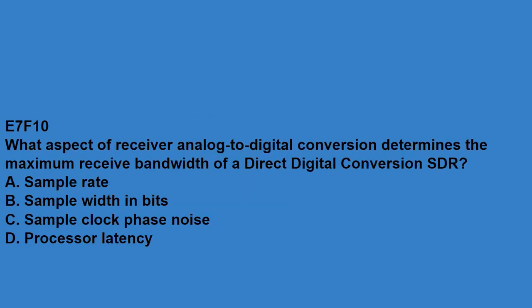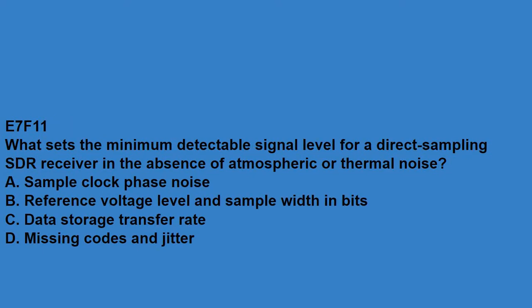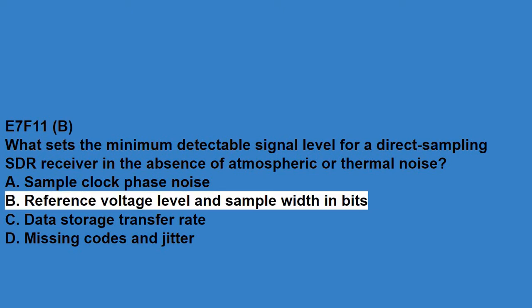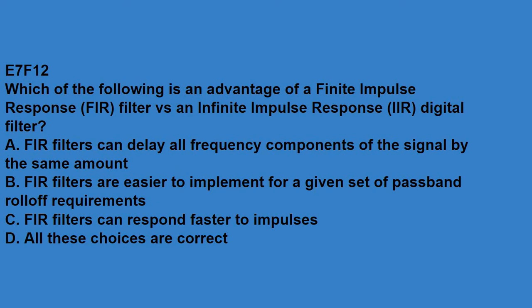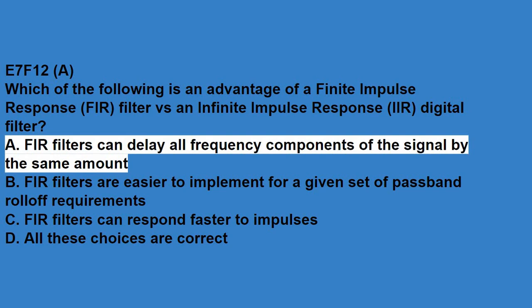E7F10, what aspect of receiver analog to digital conversion determines the maximum receiver bandwidth of direct digital conversion SDR? That is the sample rate. E7F11, what sets the minimum detectable signal level for a direct sampling SDR receiver in the absence of atmospheric or thermal noise? Reference voltage level and sample width in bits. E7F12, which of the following is an advantage of a finite impulse response FIR filter versus an infinite impulse response IIR digital filter? FIR filters can delay all frequency components of the signal by the same amount.